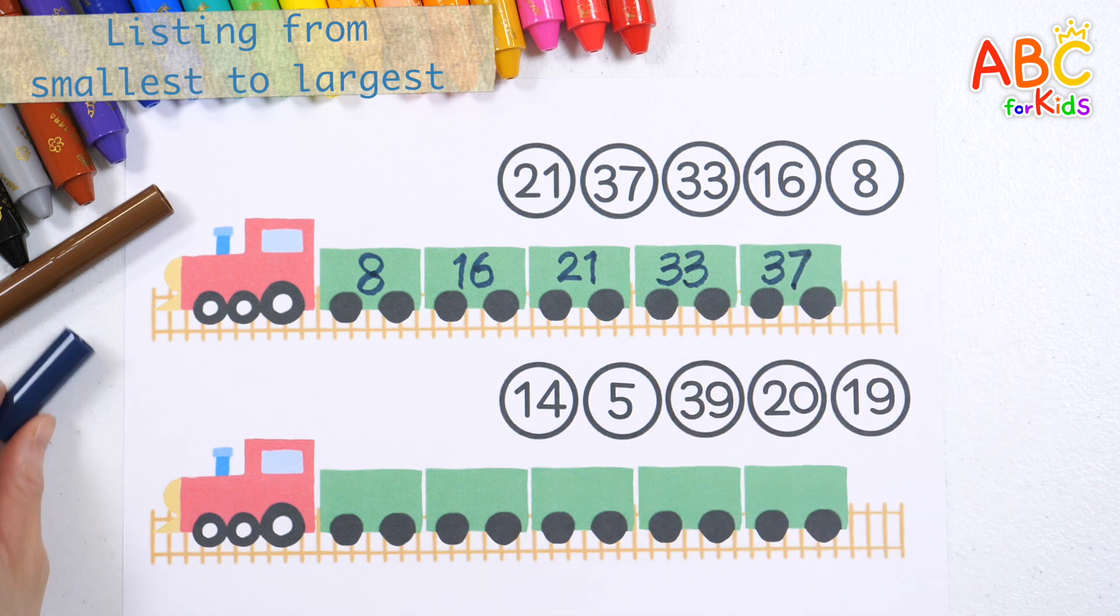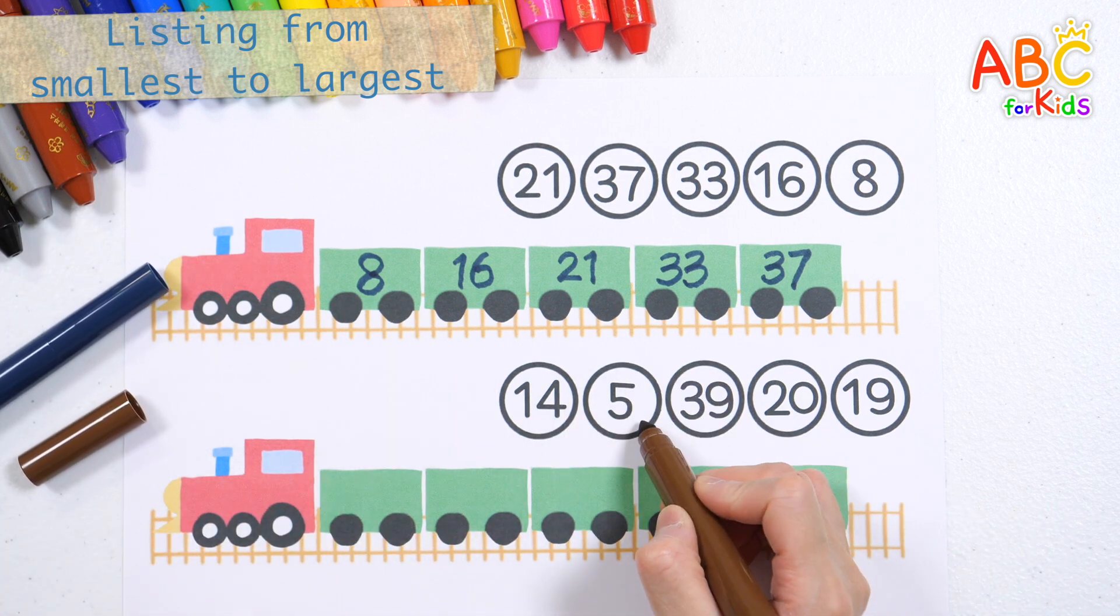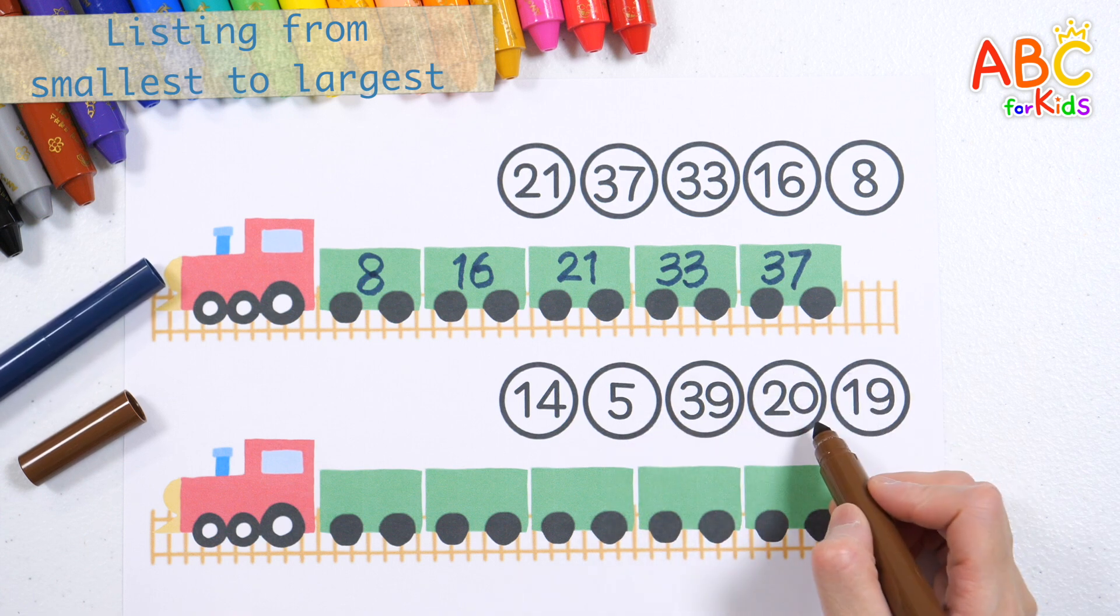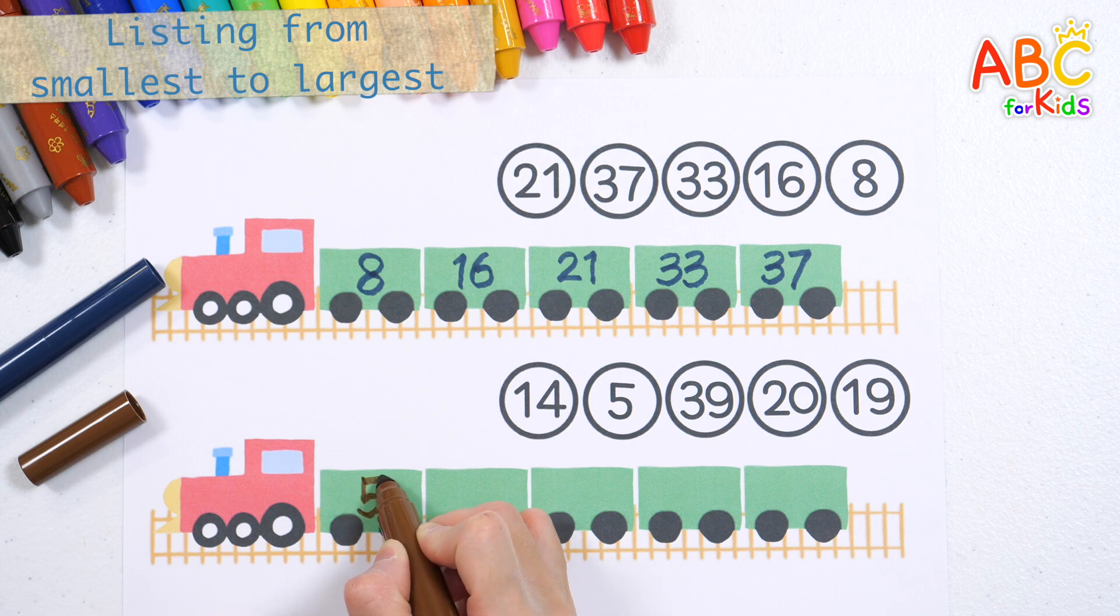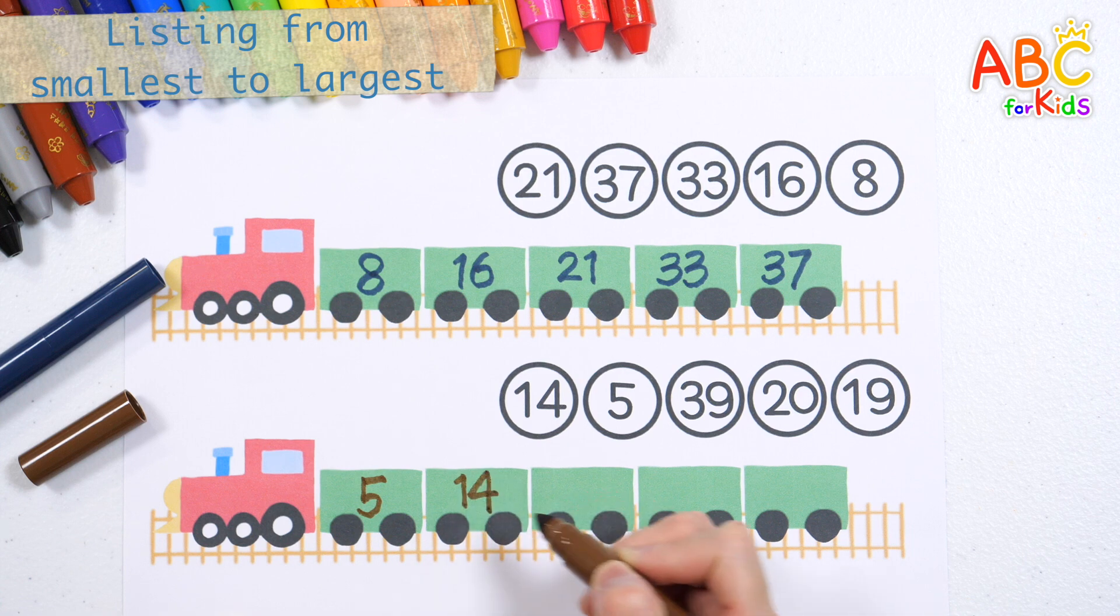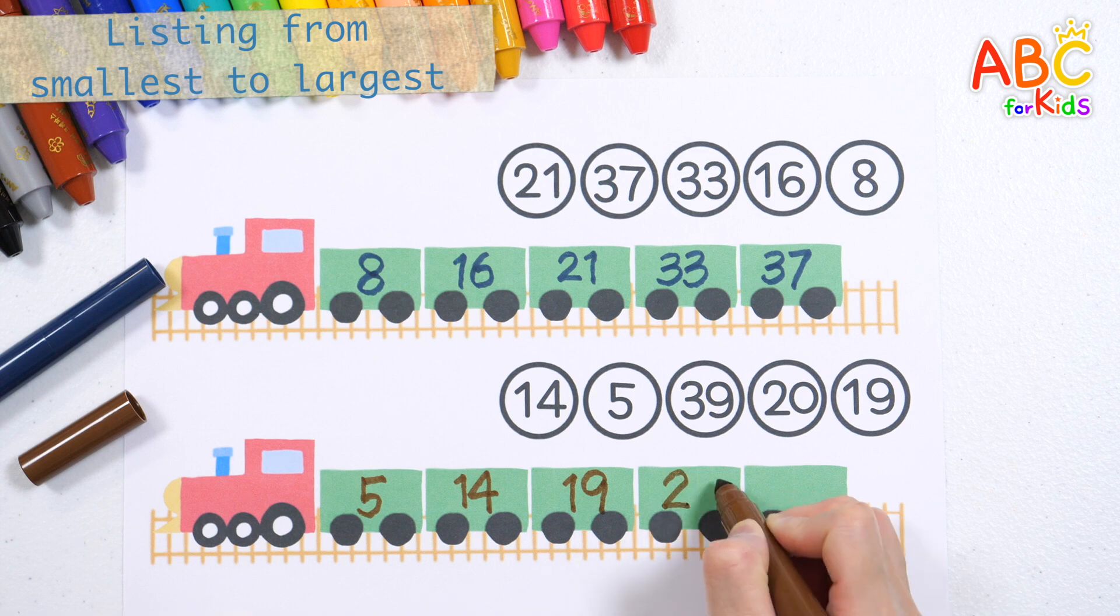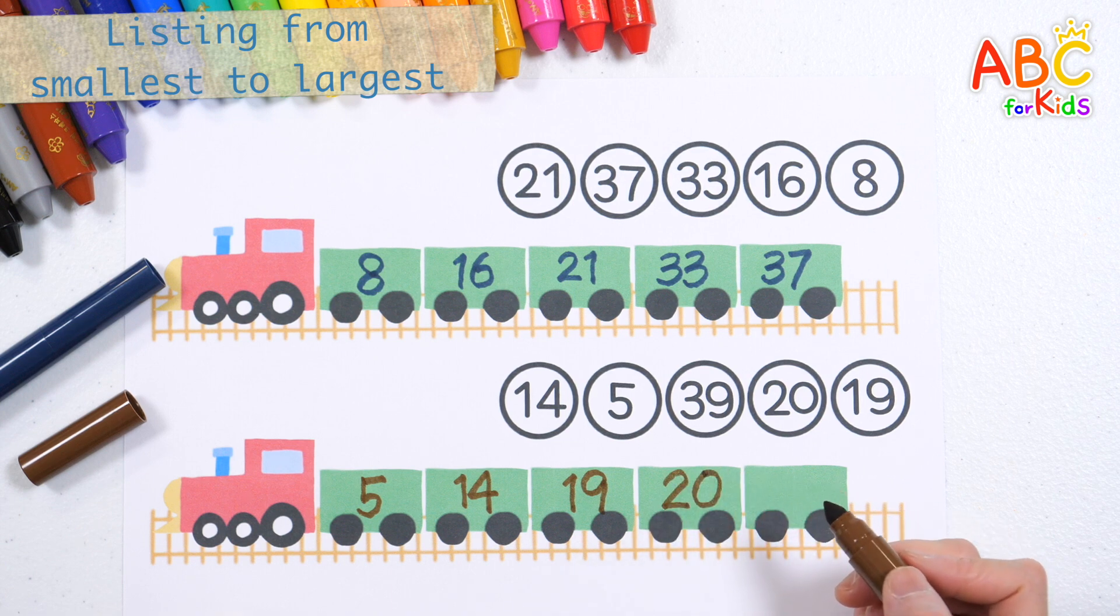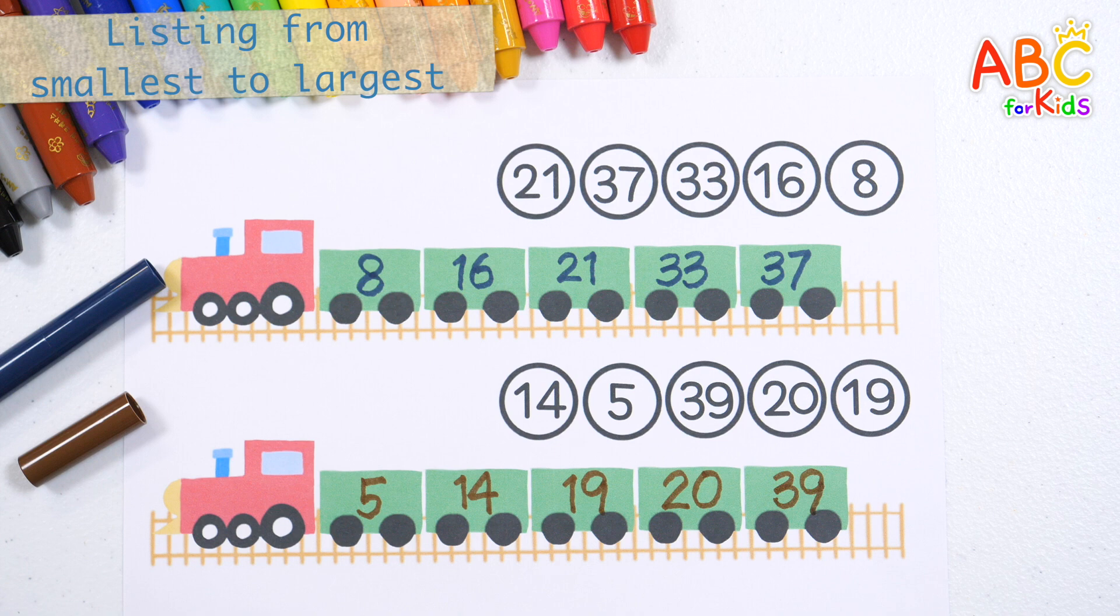Good job! Let's write it down again starting from the smallest number. 14, 5, 39, 20, 19. Let's write the numbers in order starting from the smallest. 5, 14, 19, 20, 39. Wow, good job!